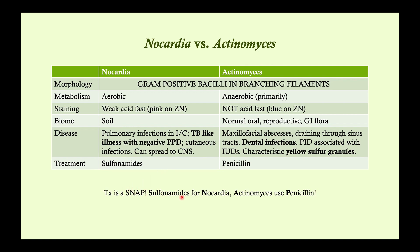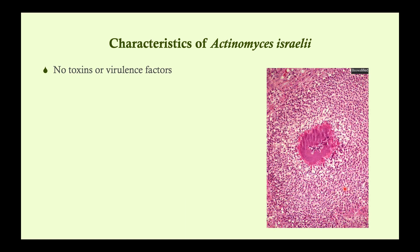Treatment is a snap when dealing with gram-positive filamentous organisms: SN — sulfonamides for nocardia; AP — actinomyces use penicillin. That is very high yield to know. There are no toxins or virulence factors for actinomyces. Here's a picture of a sulfur granule — this is a really small one. You can see it under the microscope, but some of them are actually quite large.